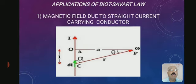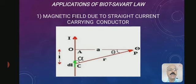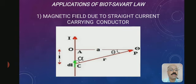Now we look at the applications of Biot-Savart law. The first application is the magnetic field due to a straight current-carrying conductor. Looking at the figure, a conductor is shown through which current I flows. A small element DL is taken, and the magnetic field is produced at point P at a distance R from the small element.